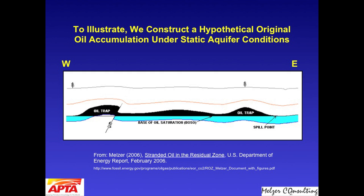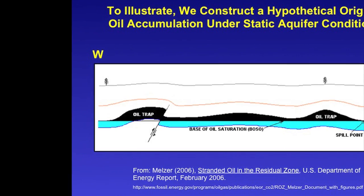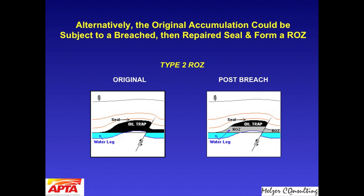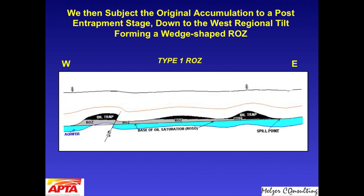On the left side here, we have a Type 2 ROZ, one in which we breach a seal to that trap and move oil out vertically. There are two other types as well: one due to a basin-wide tilt, where the basin moves down to the west, moving oil out to the east and changing the oil-water contact due to that tilt.